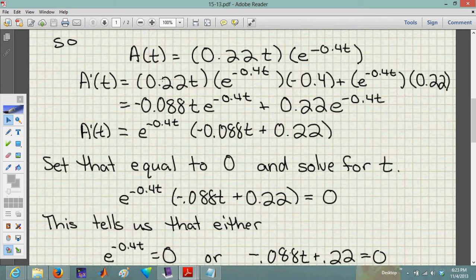And now we simplify. And I think I simplified by multiplying this over here, the negative 0.04, by the 0.22t. That gave me this negative 0.088t times e to the negative 0.4t. And then I just kind of switched these around to make it look nicer. 0.22 times e to the negative 0.4t. But you know what? I've got that e to the negative 0.4t in both of those, so I can factor it out. And when I factor it out, I have e to the negative 0.4t times negative 0.088t plus 0.22.